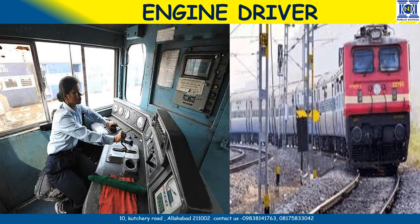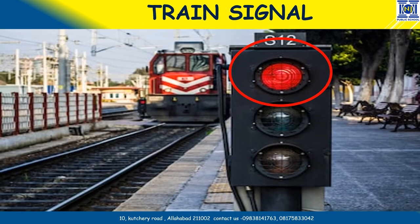Children, do you know who drives a train? Yes, the engine driver rides a train. The engine driver gets signals to start the train, to stop the train, or to slow the train. These signals are shown by the train signal. Just like the traffic signal, we also have train signal. The engine driver looks at these signals and decides whether to stop the train, to move slowly, or to go ahead.